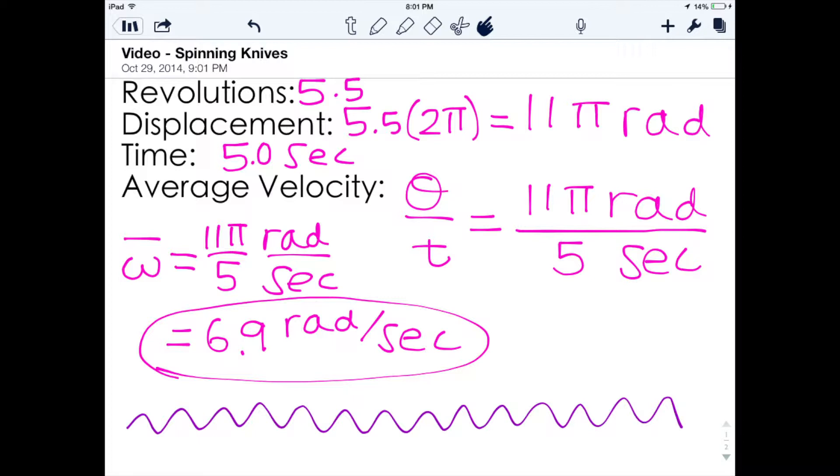Then we can calculate displacement by multiplying the number of revolutions times 2π radians to lead us to 11π radians for displacement. Then we can also calculate our average velocity, which is θ displacement over t time, which is 11π radians over 5 seconds, otherwise known as 6.9 radians per second.